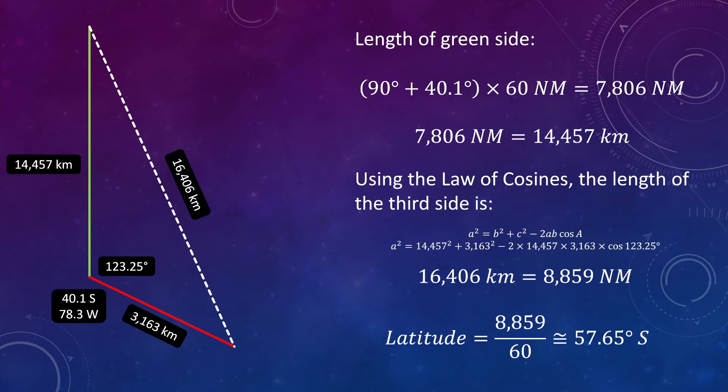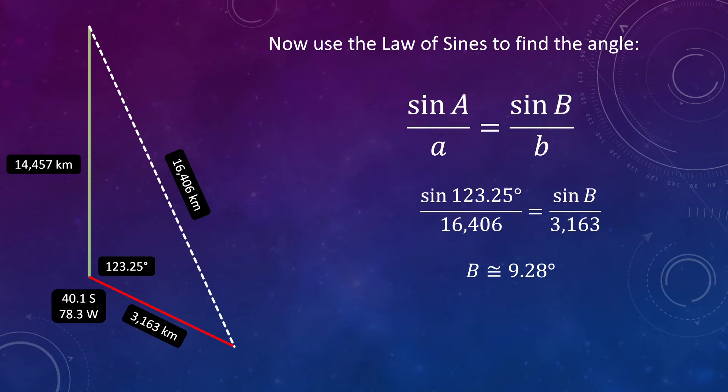And that's already not looking good for the AE map, because we were expecting a latitude of only 50 degrees south. But let's get the longitude anyway. So just like we did before, we apply the law of sines to work out the change in longitude from the GP. And that works out to be 9.28 degrees. So the longitude of our point turns out to be 69.02 degrees west.